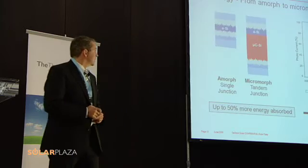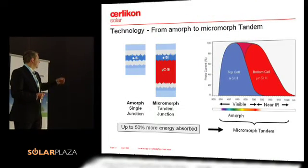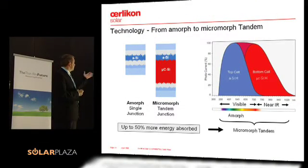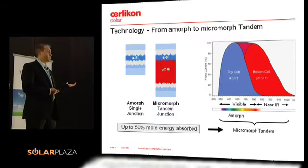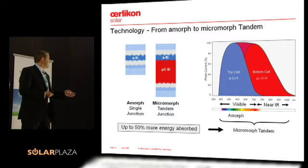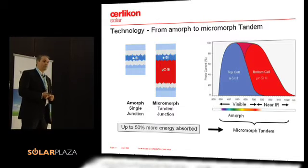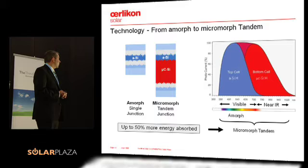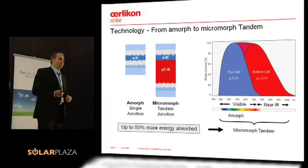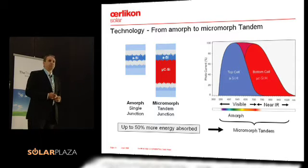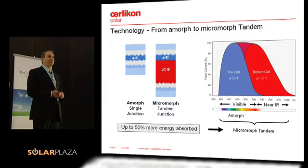How do we want to get there? Just a short introduction to the technology. Amorphous silicon, shown on the left side, is pretty much the same: you need a front contact, a back contact, a PIN junction, and an amorphous absorber — that's been well known for quite some time. By introducing micromorph — a microcrystalline PIN junction — we are actually able to get roughly 50% more energy absorbed. So basically, if you have an 80-watt module today, it becomes a 120-watt module, and the only thing changing is the absorber. The front contact, back contact, glass, and lamination foil — the big cost drivers — stay the same.